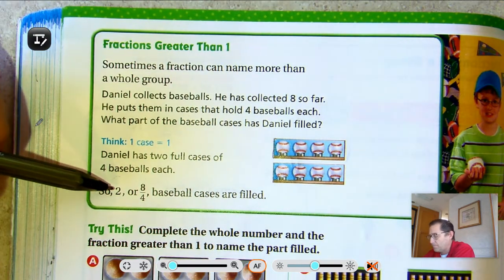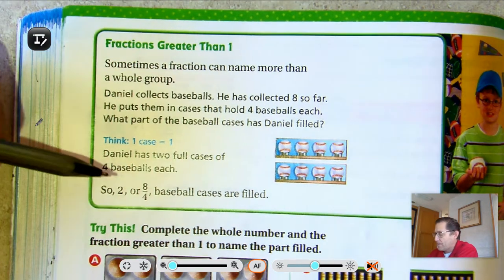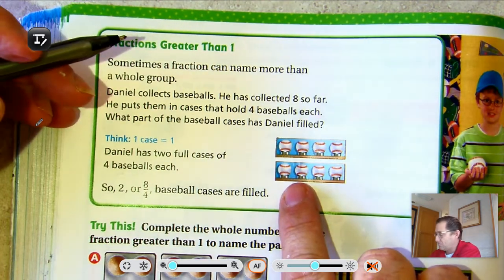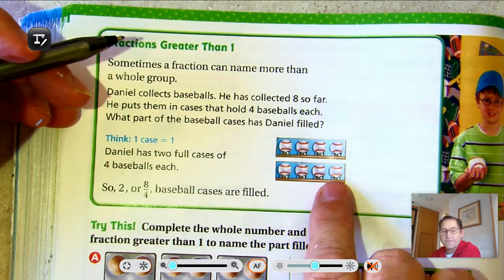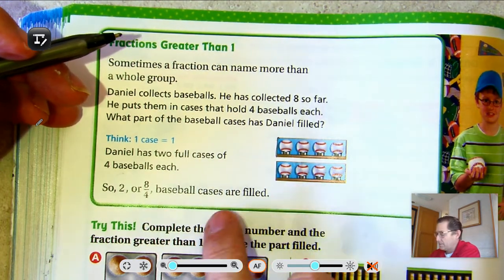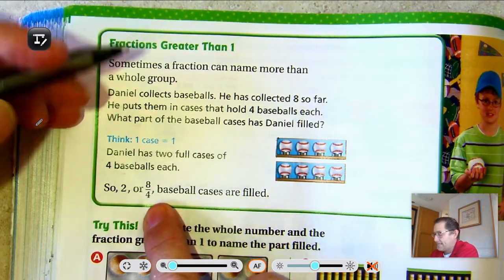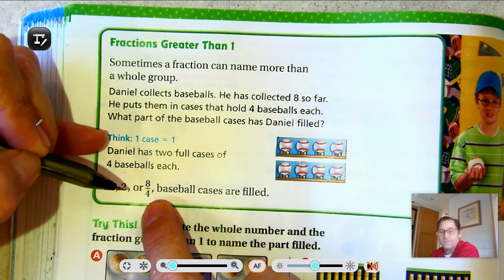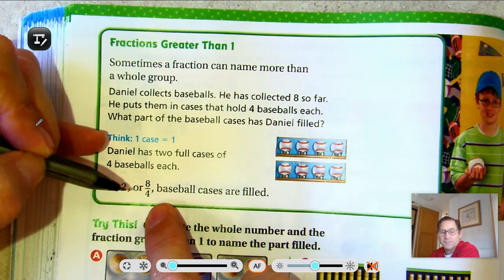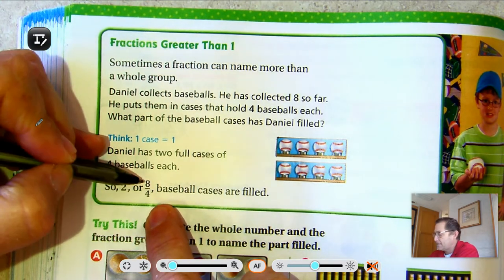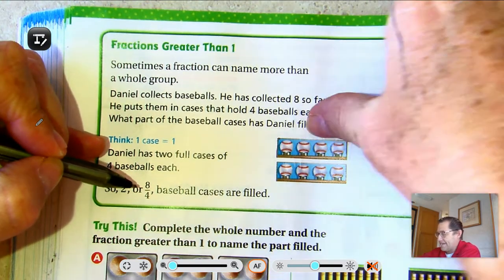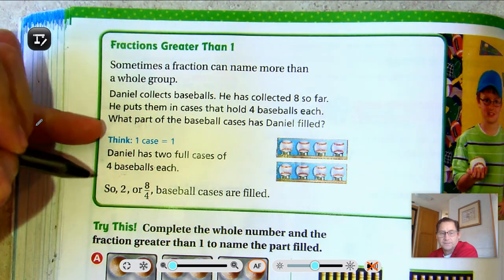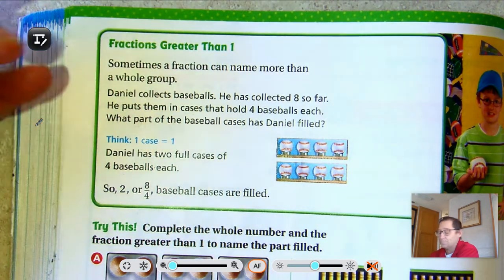How many parts are in each case? 1, 2, 3, 4. So we can take each case, have them in 4 equal parts, and he's got a total of 8 in his set. So 8 over 4, or 2.